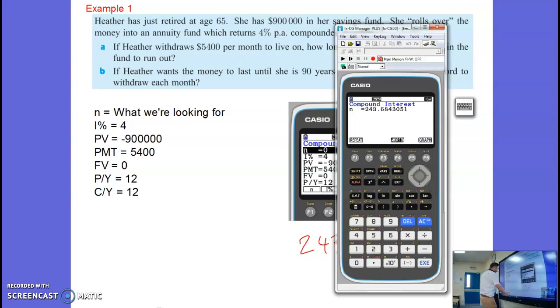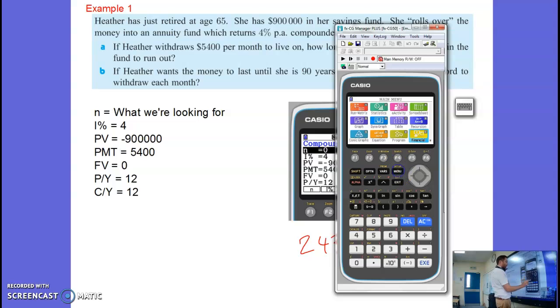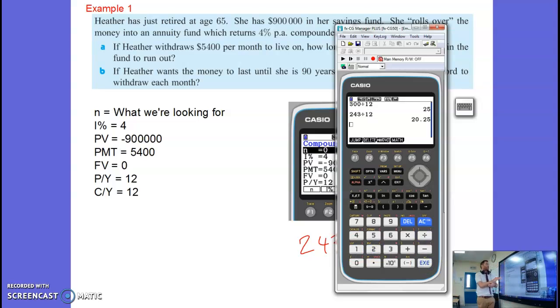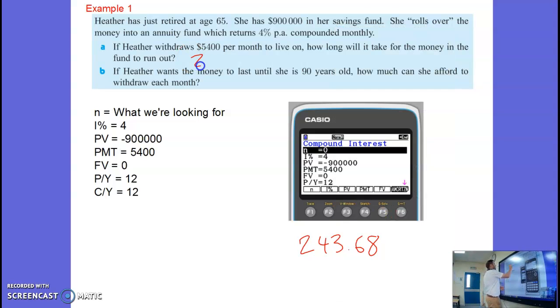If I want to change that into years, obviously I could go 243 divided by 12 and we get 20 years and a quarter. 20 years and 0.25 of a year which is three months. So 20 years, three months.